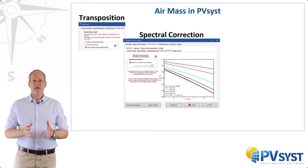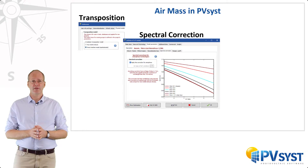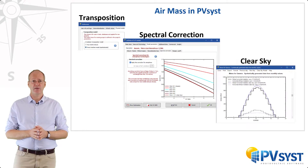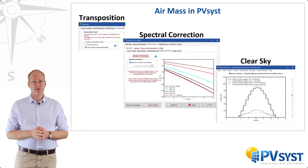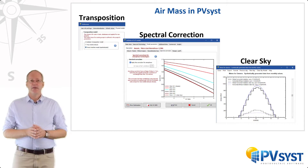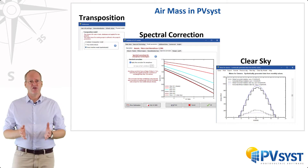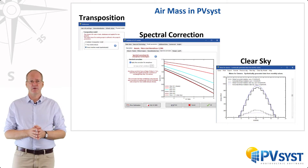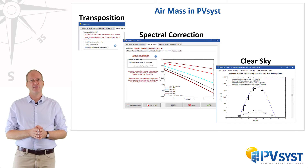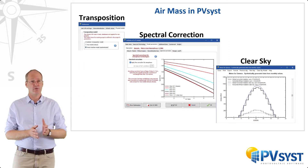The air mass is also useful in the clear sky model in PVSYST. The clear sky model is used to perform cross-checks and irradiance estimates during the design phase of a project, and is not used during simulations.